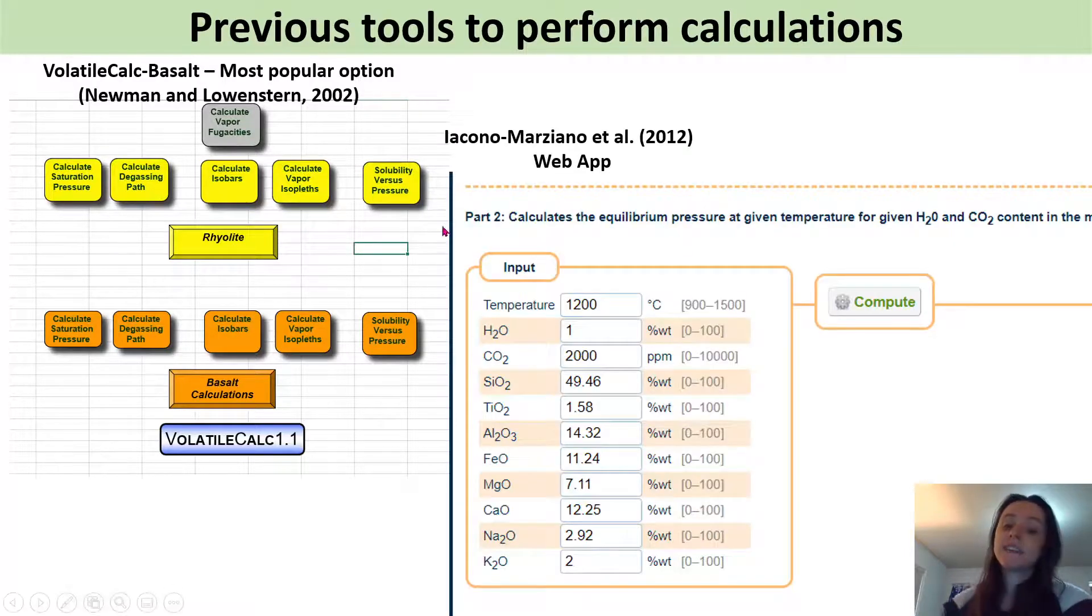There are a series of more recent tools as different papers have come out parameterizing solubility models. So here is a web app from Iacono Marziano and you can see you type in your temperature, your water, your CO2 and your silica, much like volatile calc but this model also requires you to type in the concentration of these other oxides. You would then press compute and it will give you a saturation pressure.